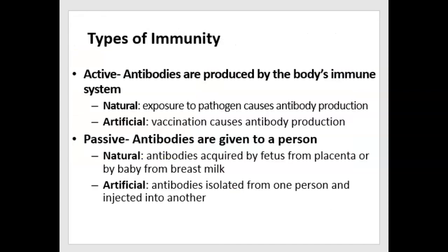So the two basic types of immunity are active versus passive. In active immunity, antibodies are produced by the body's own immune system. In passive immunity, a person receives antibodies that were made by another individual. Either of these basic types could be acquired naturally or artificially.